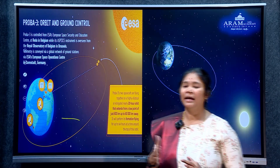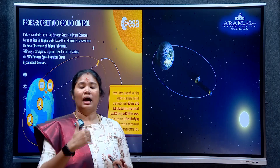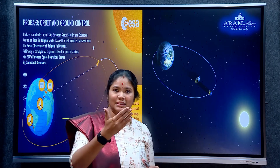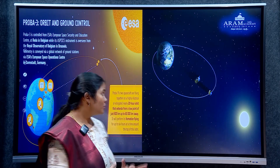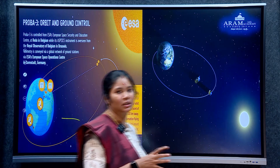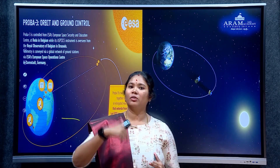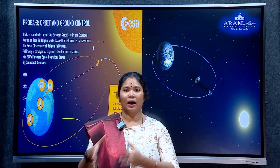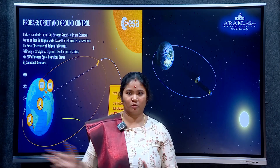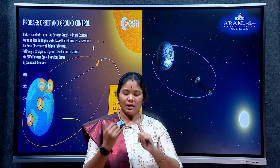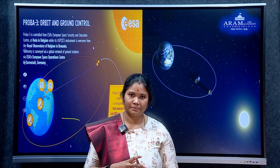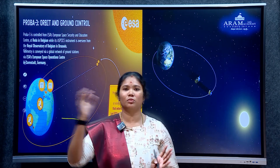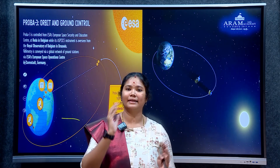Proba 3 has a highly elliptical orbit. The perigee point is 600 km and the apogee point is 60,000 km. The Sun-facing side is the apogee position where the satellites spend most of their science time. This is a very important piece of information about Proba 3. To summarize: Proba 3, Aditya L1, and Parker Solar Probe can be compared. Proba 3 creates an artificial solar eclipse in space using two synchronized satellites at 60,000 km distance.